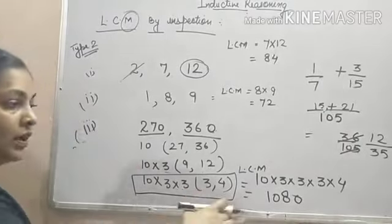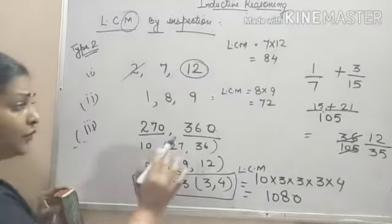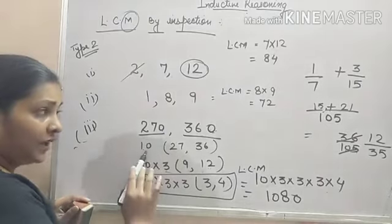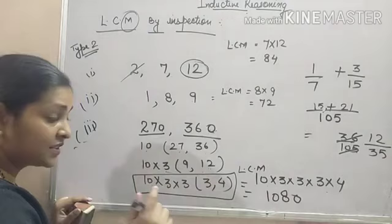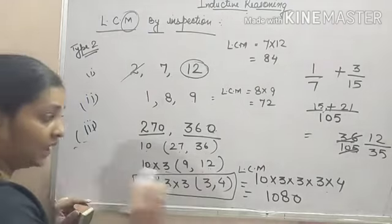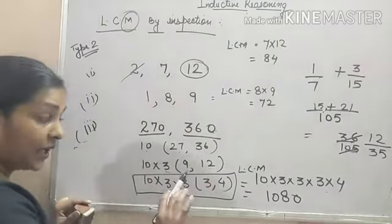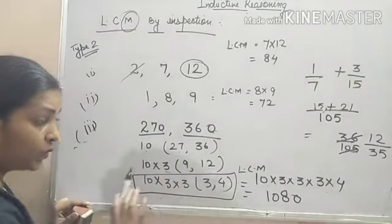Just you have to find the dash. First of all, we will take out the common factor as 10. 27 and 36 are left. Then you can see that both are having 3 as the common factor. I have taken out 3. 9 and 12 are left. Again, 3 is the common factor. Take it out. What is that?